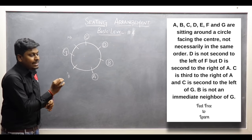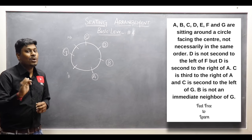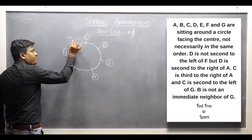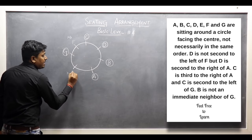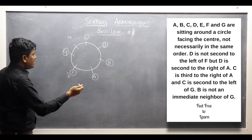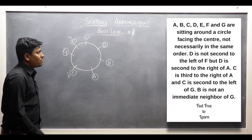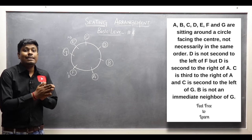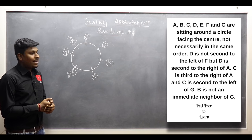We still have two letters remaining. According to point one, D is not second to left of F — F's left hand side at the second place, D is not sitting. So I should not fix F in the position where F's left second place would be D. If I fix F in the other position, then the remaining letter E goes in the last spot. That's the final answer for arrangement number four.